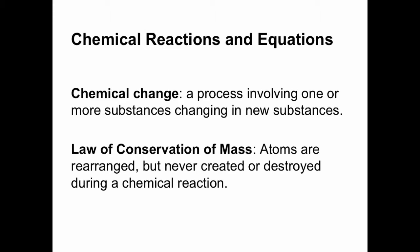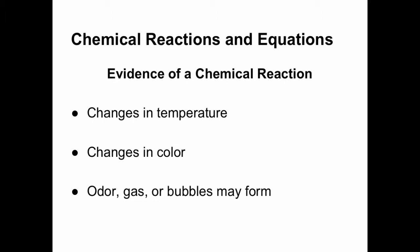You can't add anything. You can't lose anything during a chemical reaction. And that's how we get to this concept of balancing the equation, which later on will lead us to stoichiometry — predicting how much product you're going to get based on a certain starting amount. A couple of things you can look for that are signs that a chemical change or chemical reaction has taken place.